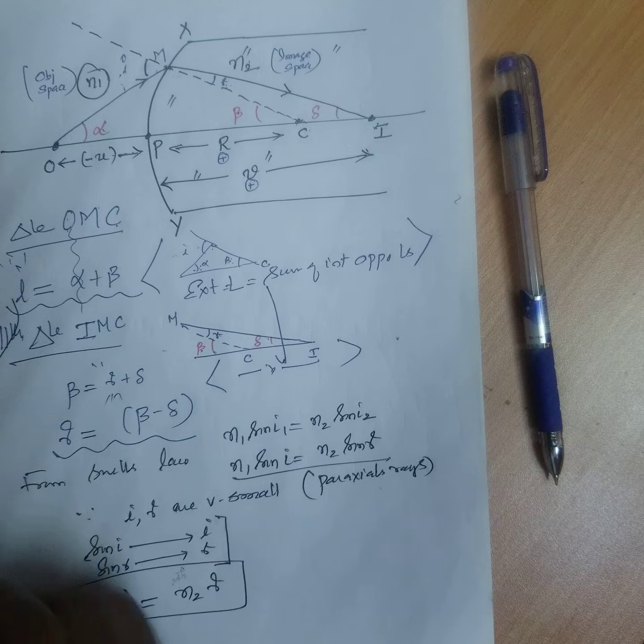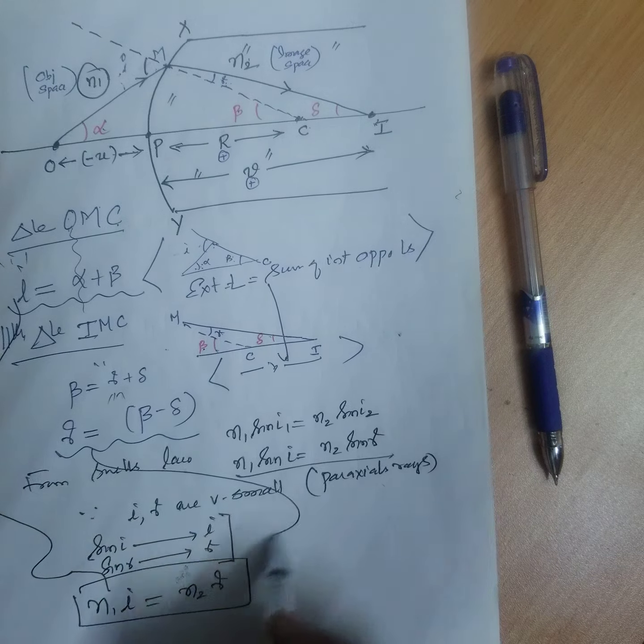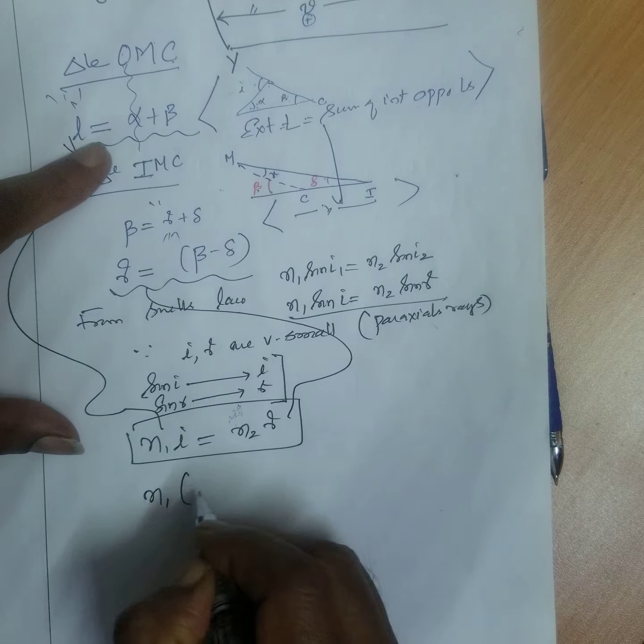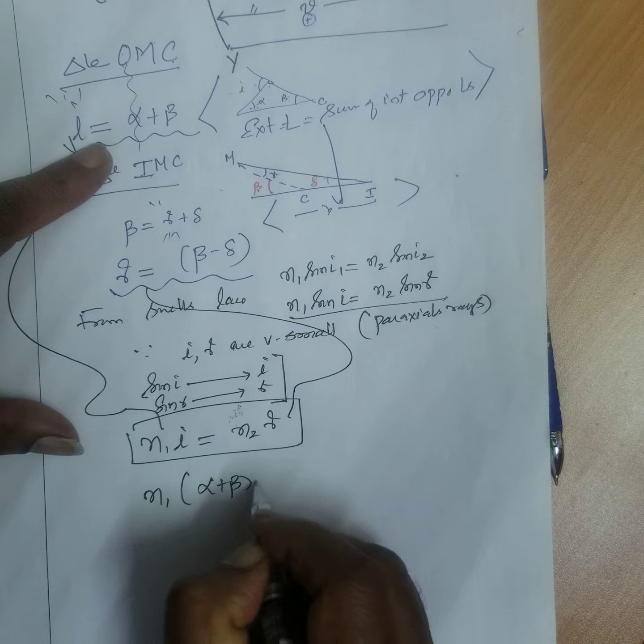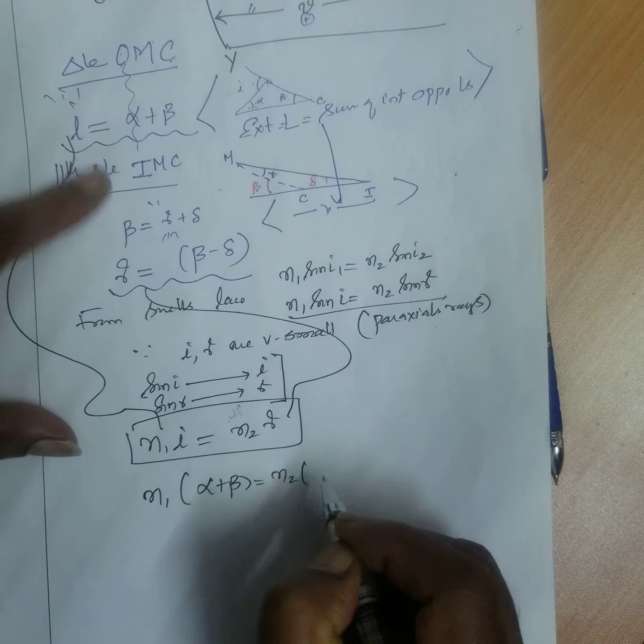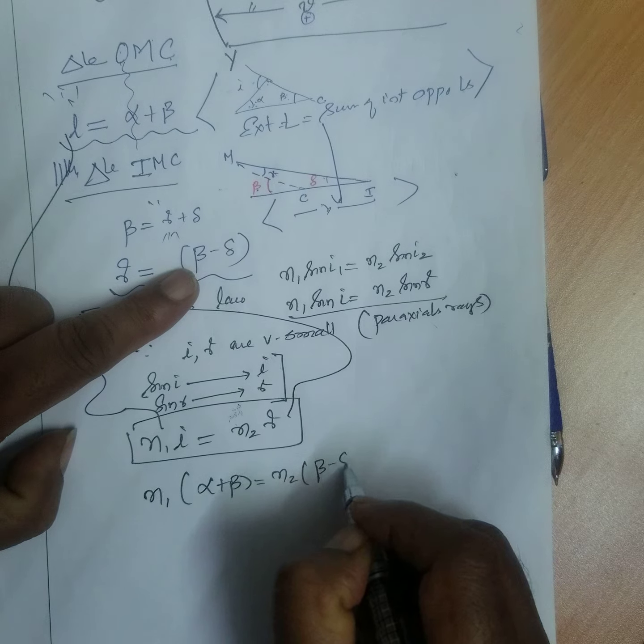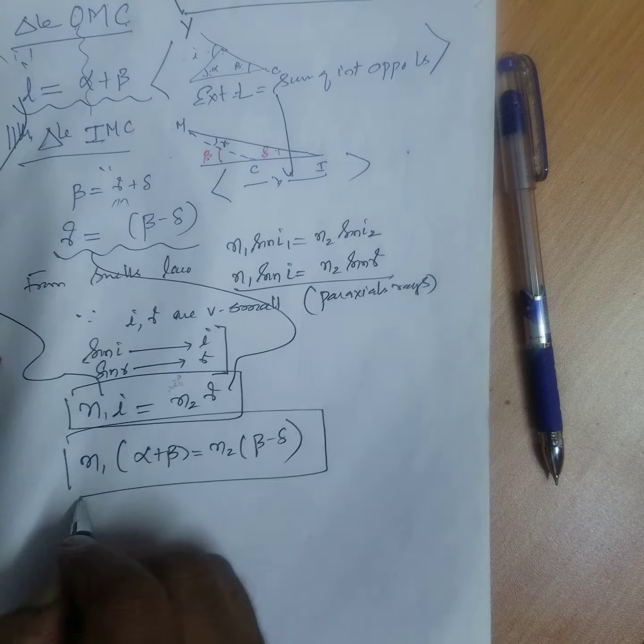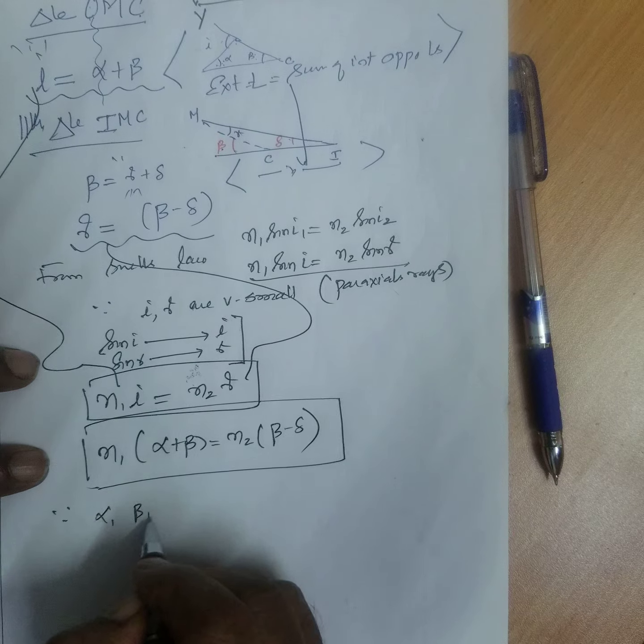Then, you substitute I here, R you substitute here. What I get? N1 alpha plus beta is equal to N2. R is what? Beta minus delta. Is it clear?